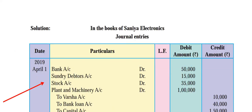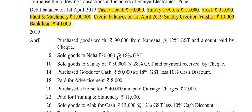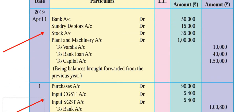Next transaction: sold goods to Neha at the rate of 18% GST. Neha is the receiver - goods are going out. So Neha's account debit, sales account credit, and applicable 18% GST, split into 9% central GST and 9% state GST as output GST. Let's go to the format.